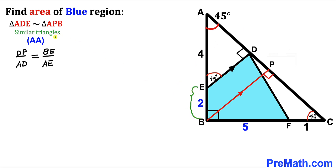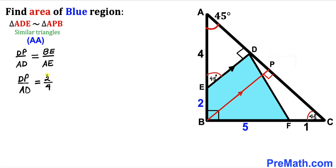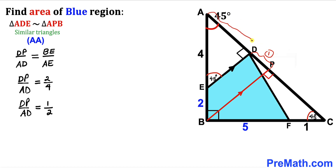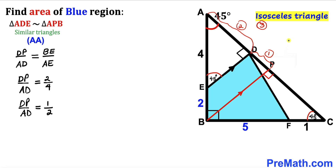BE is 2 units and AE is 4 units, so BE/AE reduces to 1/2. This means if DP is 1 then AD is 2, making the whole segment AP equal to 2 plus 1 plus 1, which equals 3.